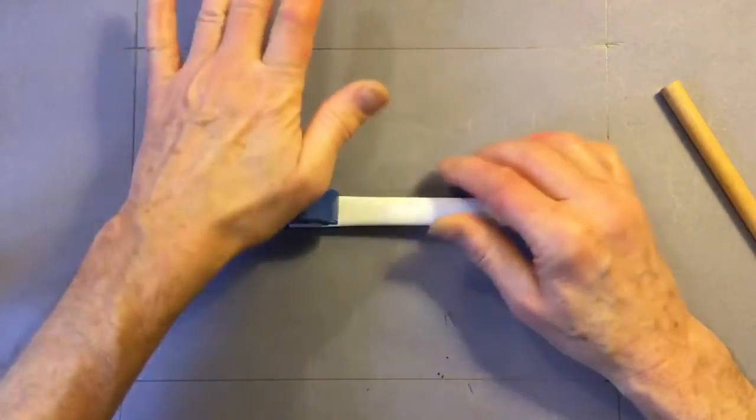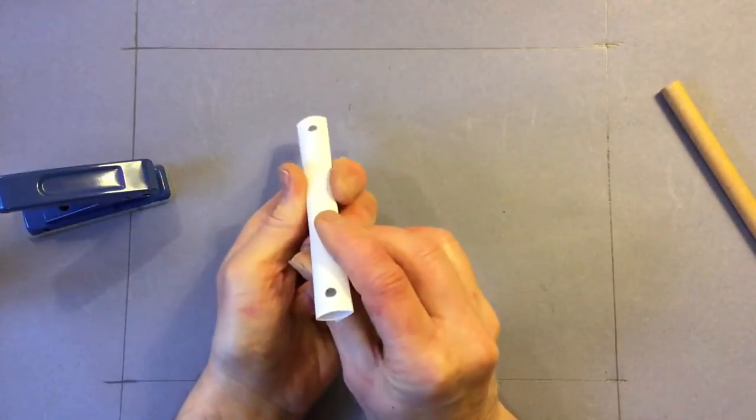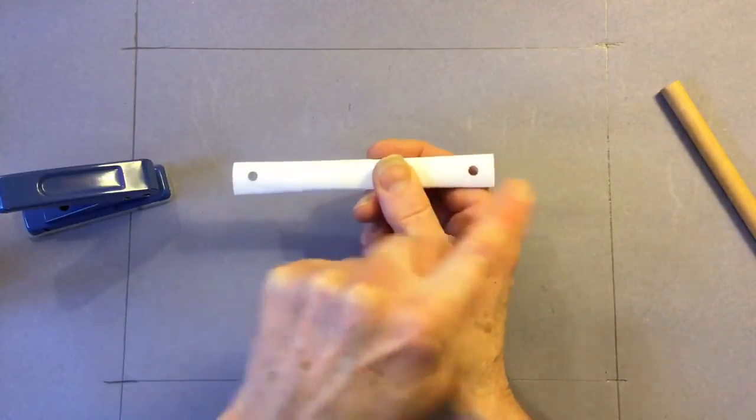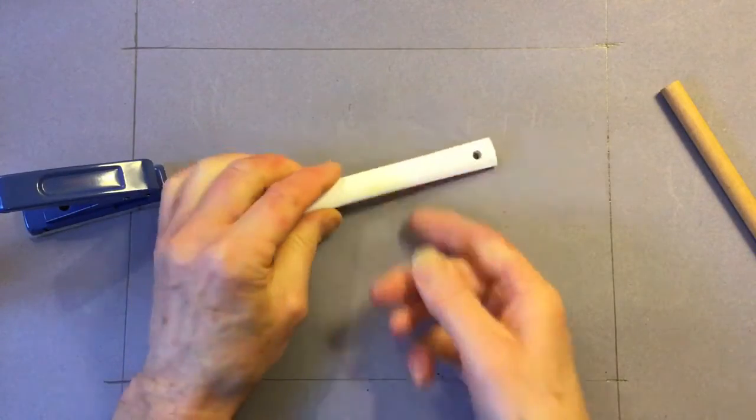Check it's in line. Punch. And then just check there. The two holes are perfectly in line which is exactly what we want.